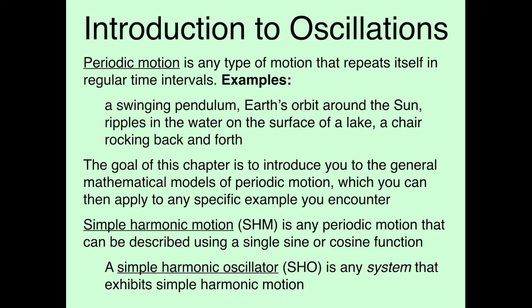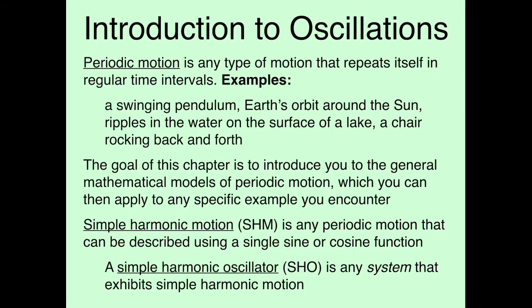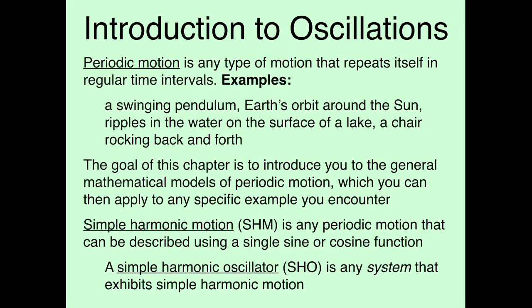Let's start with periodic motion. Periodic motion refers to any type of motion that repeats itself in regular time intervals. Examples include a swinging pendulum, which undergoes periodic motion because the motion repeats itself every so often; the Earth's orbit around the sun, which repeats itself every year; ripples on the surface of a lake bobbing up and down; or a rocking chair rocking back and forth.